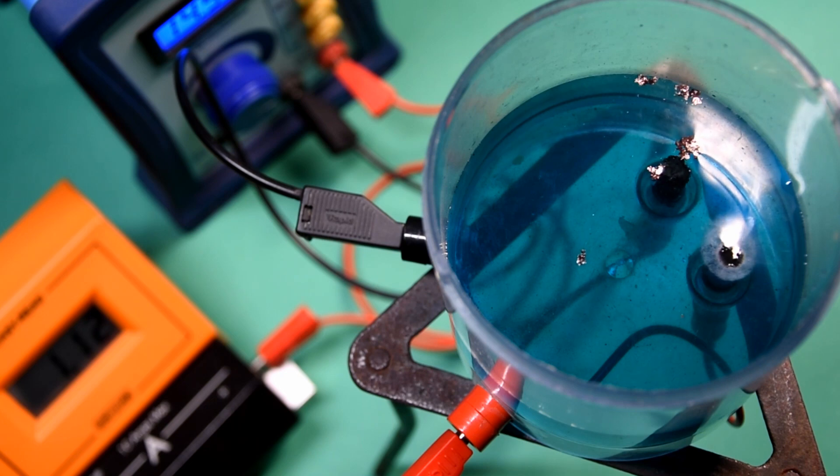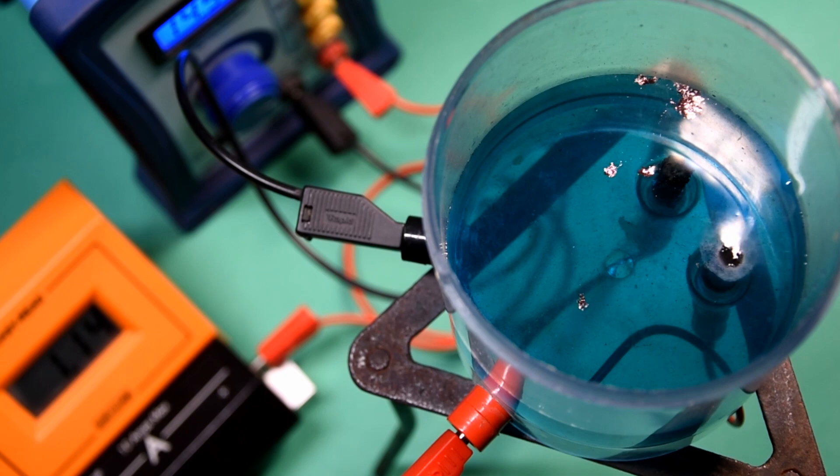The copper tends to float on the surface of the copper sulphate rather than adhere to the cathode as you'd like. It might be sensible to collect the gas and test it.